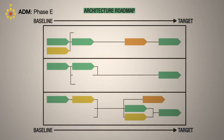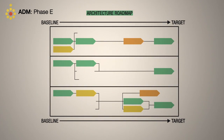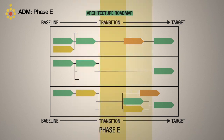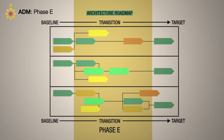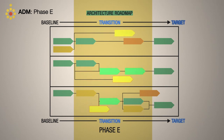When the change is so large that it's impossible to go directly from the baseline to the target architecture, it's Phase E that produces an incremental approach made up of intermediate or transition architectures. And it's Phase E that maps the required architectural changes to investment programs and projects that have the funding and resources to carry out the work packages, and deliver the transition and target architectures.